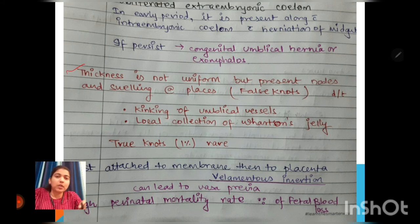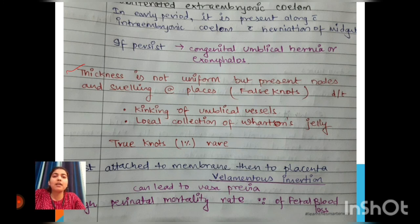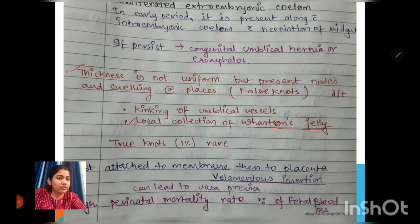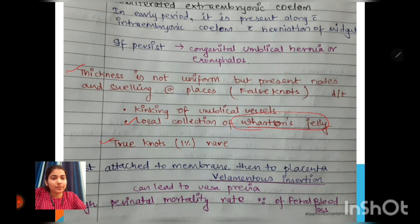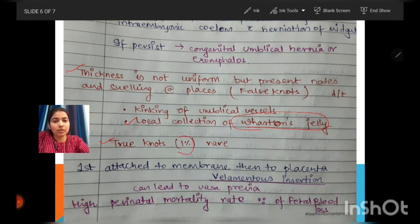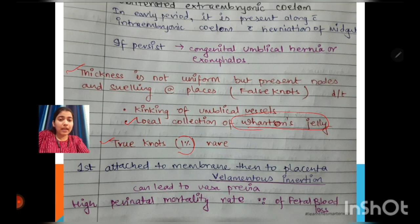The thickness of the umbilical cord is generally not uniform; it presents with nodes and swellings at places. These are called false nodes, which form due to kinking of the umbilical vessels and local collection of Wharton's jelly. True nodes are rare in the umbilical cord, occurring in generally only about one percent of cases.